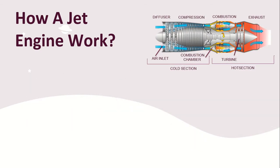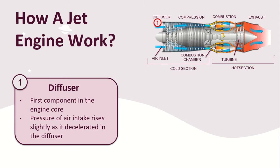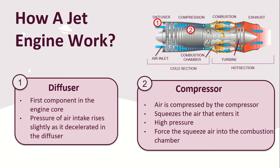The diffuser is the first component in the engine core. Air comes in through the inlet and its pressure rises slightly as it decelerates in the diffuser, then it enters the compressor. In the compressor, its job is to raise the pressure of incoming air by compressing the air. This is needed to heat the air up so it burns better when the pressure is high.